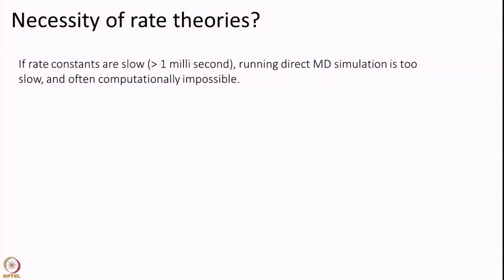Today we will ask a different question: if I can run molecular dynamics, are rate theories really necessary? Well, they are. The reason is that molecular dynamics simulations are very computationally expensive. Specifically, if rate constants are slow — say a reaction happening on a millisecond timescale — running an MD simulation for that longer time is extremely hard. Very few computers in the world can do that. So if all you want is to calculate a rate constant, MD is not necessary — it is one of the tools. Transition State Theory is computationally cheap and effective.